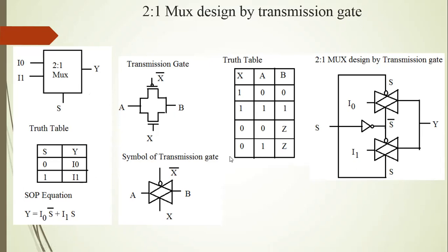When X input is logic 1 and X-bar input is logic 0, but X input is logic 0 and X-bar input is logic 1, both transistors — N-channel and P-channel — are in the OFF state. Then the output is in a high impedance state. High impedance state means Z, which means no current and no voltage. This is the working of a transmission gate.